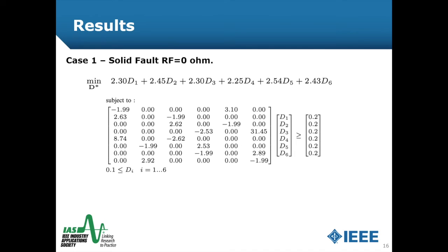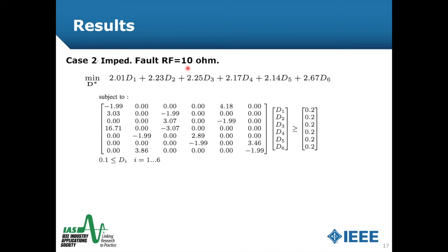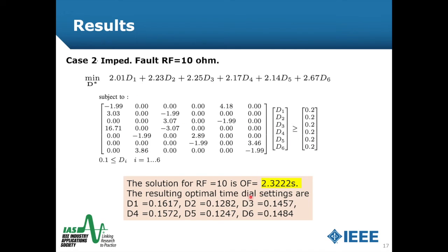We have two main cases. For the solid fault case, the objective function is approximately 3.6551 seconds, and these are the time dial settings for each of the six relays in the case study. For the second case with fault resistance equal to 10 ohms, the objective function is 2.3222 seconds, with lower TDS values than the solid fault case, making this case faster than case one.